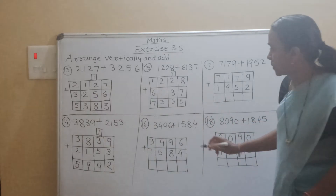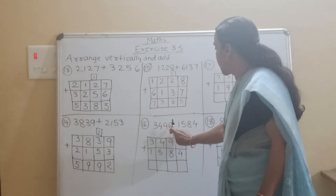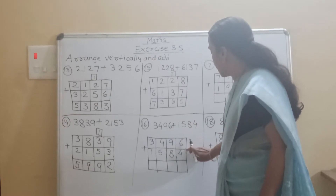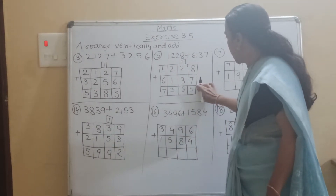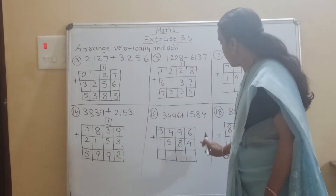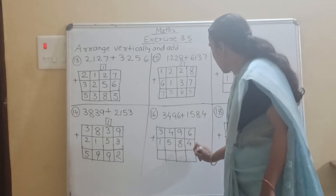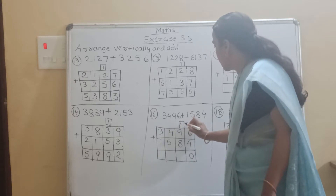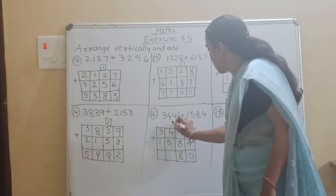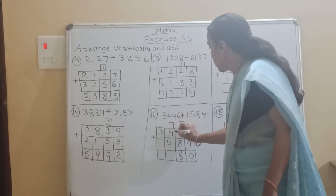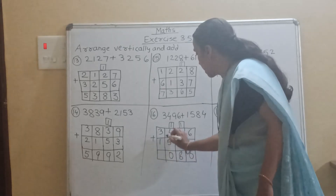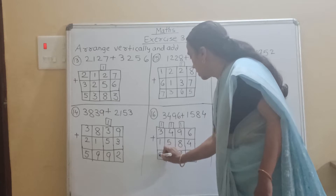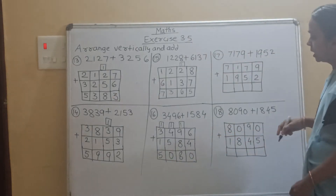Now see the 16th question: 3496 plus 1584. In every example, write each number in a separate box. So 6 plus 4 is 10, carry 1. Then 9 plus 1 is 10, 10 plus 8 is 18, carry 1. Then 4 plus 1 is 5, 5 plus 5 is 10, carry 1. Then 3 plus 1 is 4, 4 plus 1 is 5. Our answer is 5080.